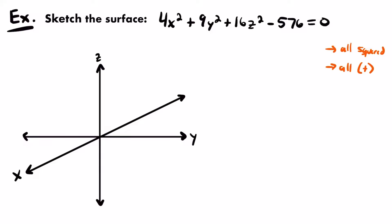Finally, one more thing I notice is that this equation has a constant term. Right now it's negative, but that's because it's on this side of the equation. If we added 576 to both sides, we would have a positive constant term. The most important thing to notice is that we do have a constant term. So from these three things, we can make a conclusion about the type of surface this equation represents.